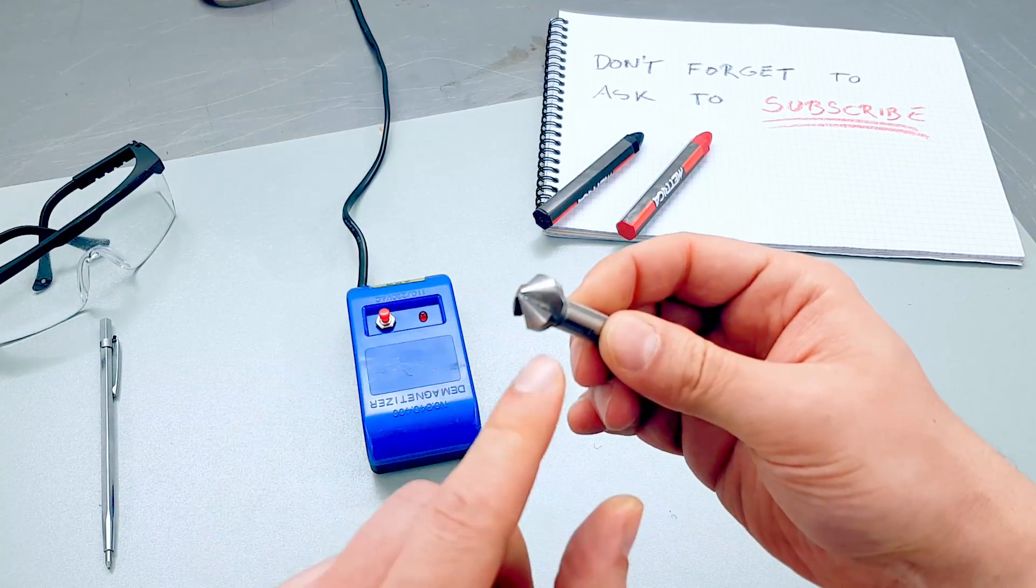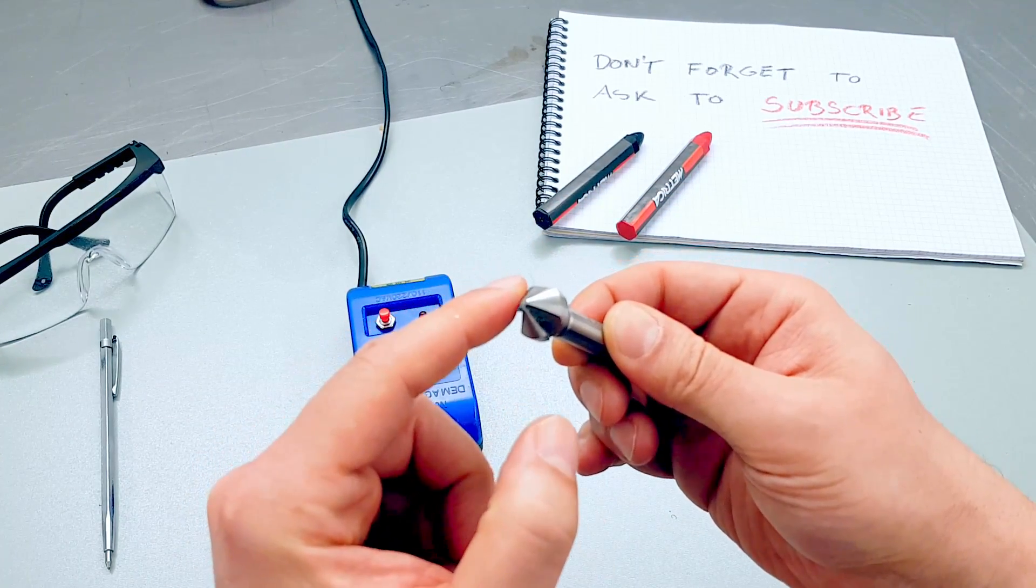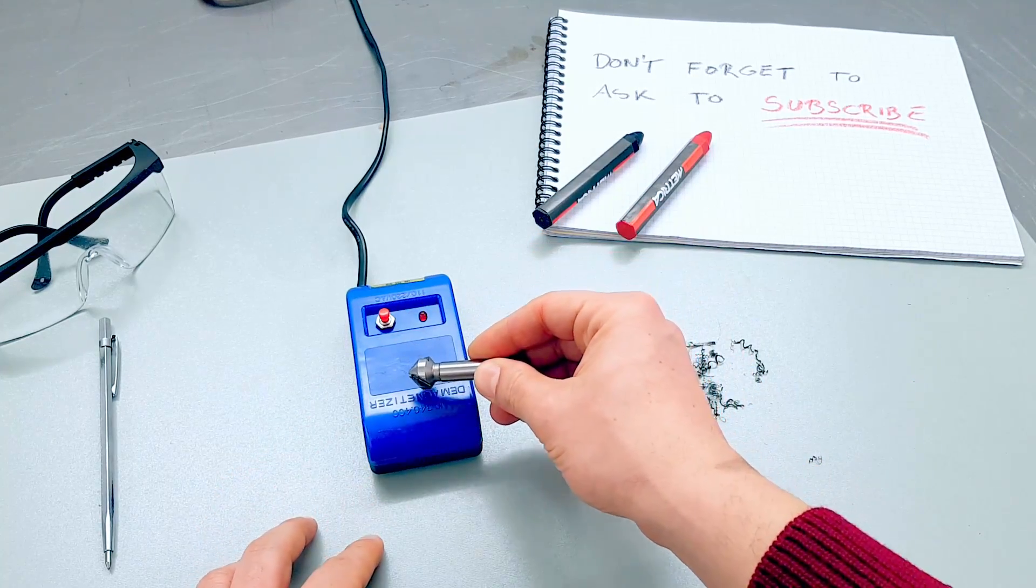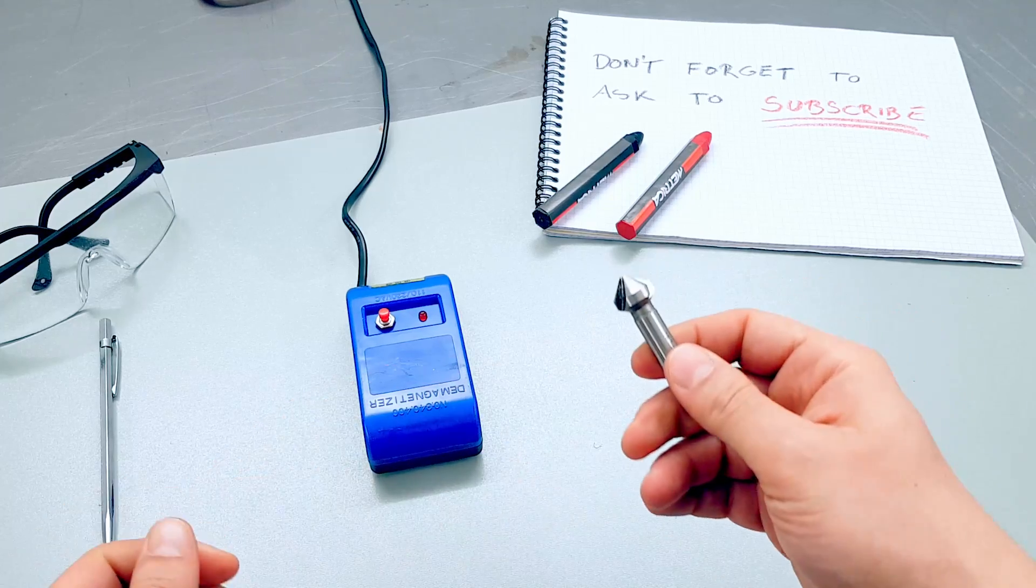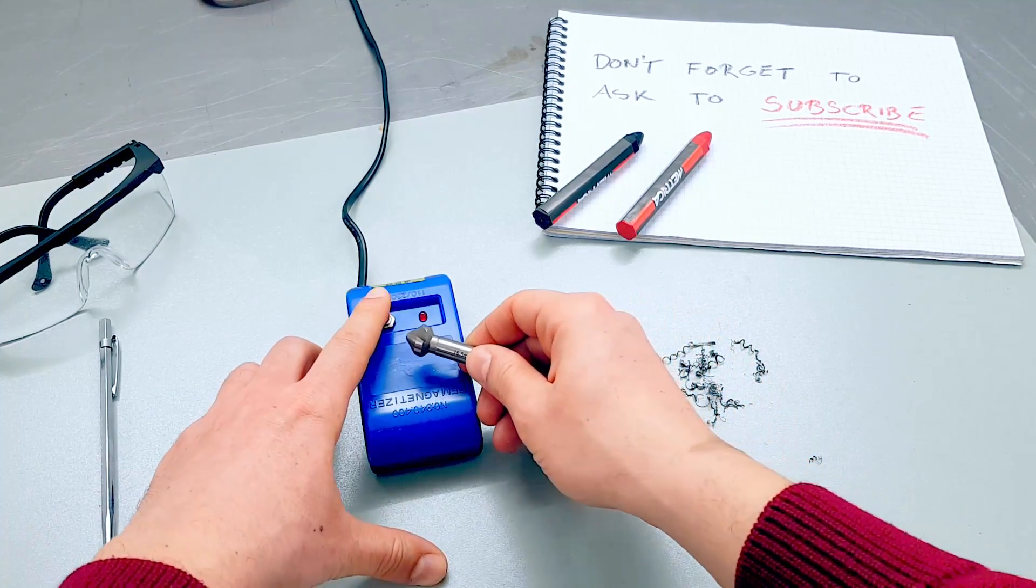Because this object is not that small, I prefer to do it for all three sides, from close to far away. In this way it should lose the magnetic field. So let's try it.